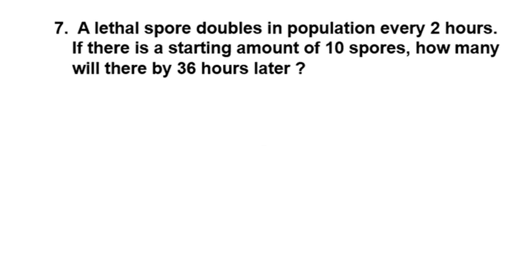A lethal spore doubles in population every two hours. If there is a starting amount of 10 spores, how many will there be 36 hours later? Same thing. We have a, which we do not know, is equal to our starting amount, which is 10. And then we have doubles, so that is going to be 2. And we have every 2 hours, 36 hours later. Every 2 hours, so we have to take that 36 hours and divide that by 2 to get the total number of time periods, which is 18.